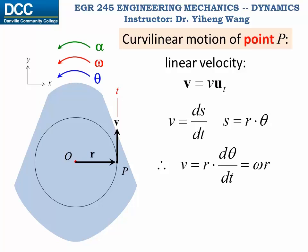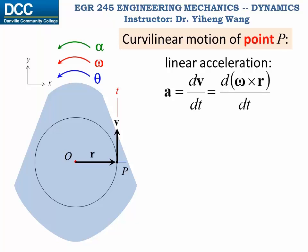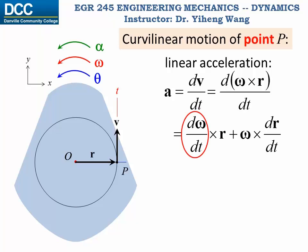In vector formulation, the linear velocity of point P as a vector equals the cross product of angular velocity of the rigid body — which has a component of k — cross the position vector of point P. The linear acceleration a equals dv/dt, and since v equals omega cross r, by applying the product rule from calculus, a equals d omega/dt cross r plus omega cross dr/dt. The first term is the angular acceleration alpha, and the second term is once again the linear velocity omega cross r.